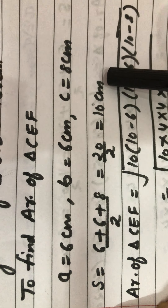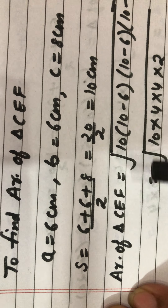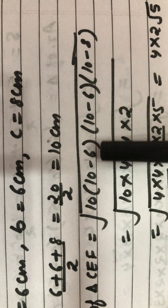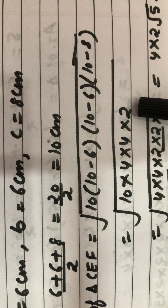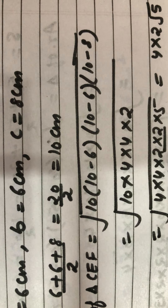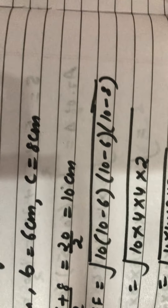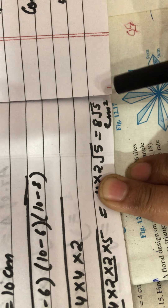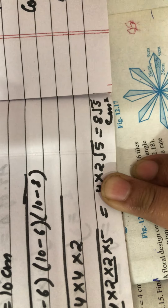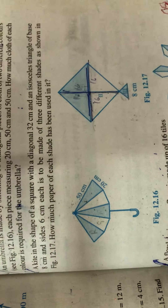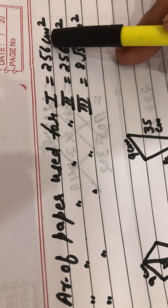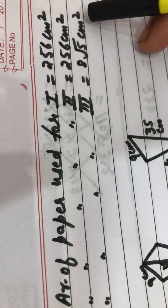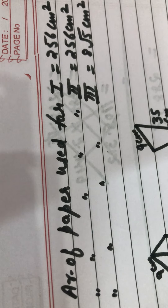Putting the values: √(10 × 4 × 4 × 2). Making factors: 10 = 2 × 5, and 2 = 2. We get one pair of 4 and one pair of 2, giving area of triangle CEF = 8√5 cm². So the area of paper used for the first part is 256 cm², second part is 256 cm², and third part is 8√5 cm². I hope this question is clear to all of you.